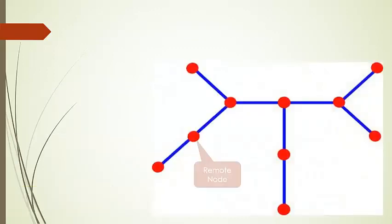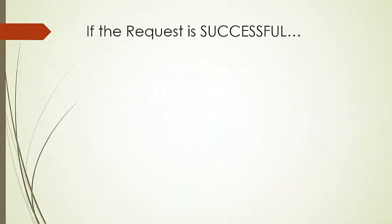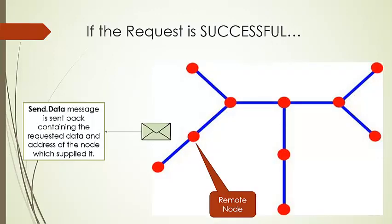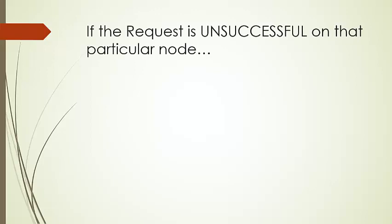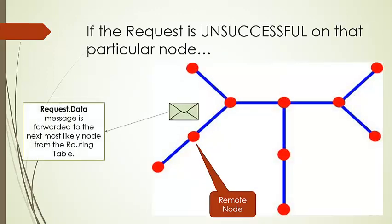Now the remote node checks the data store for the key, and if the key is found, it sends the data and starts a timer. If the request is successful, the remote node sends the data back containing the requested data and the address of the node which supplied it. If the request is unsuccessful on that particular node, then the remote node sends the message to the next most likely node from its routing table.